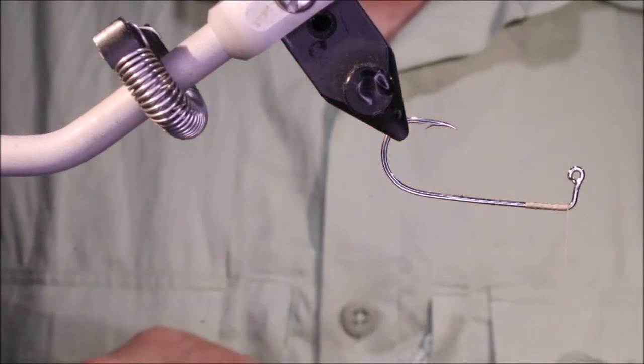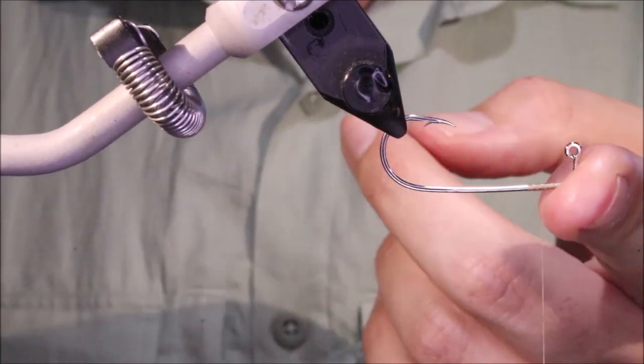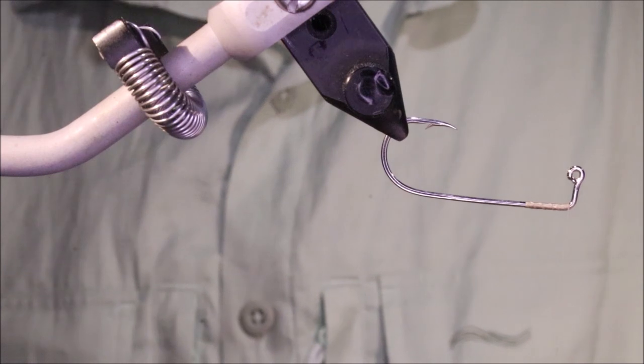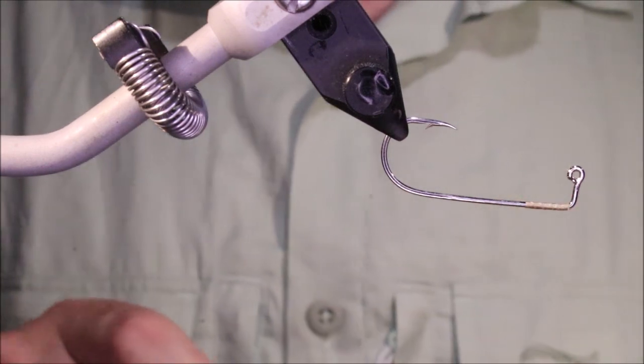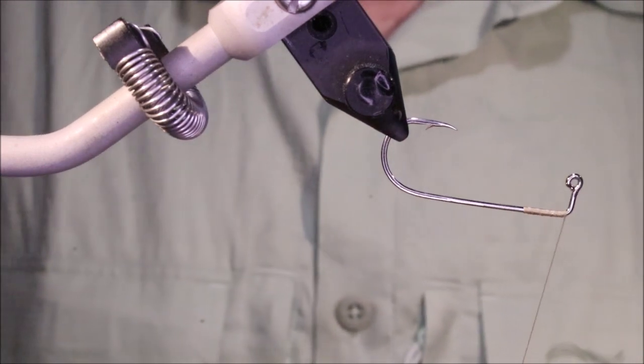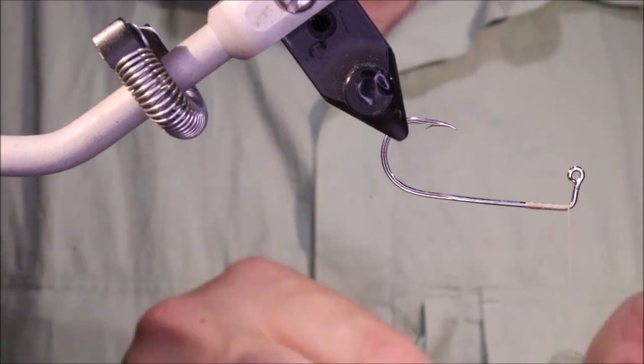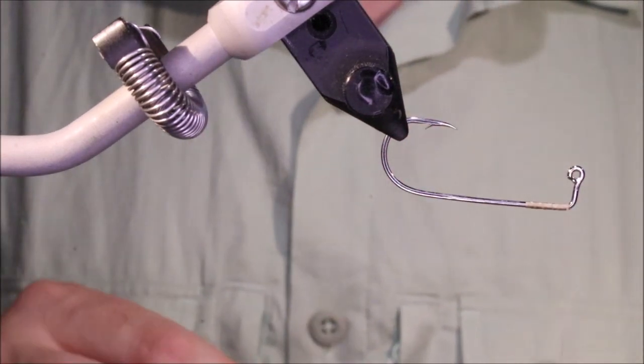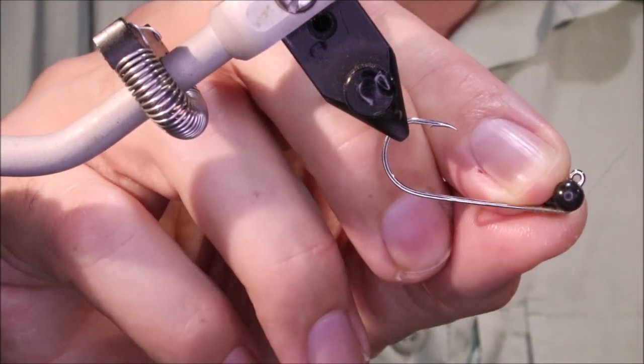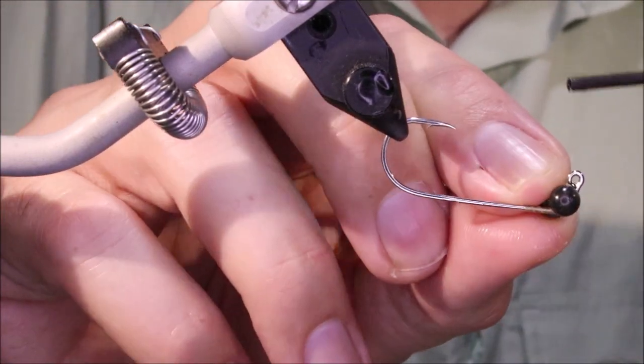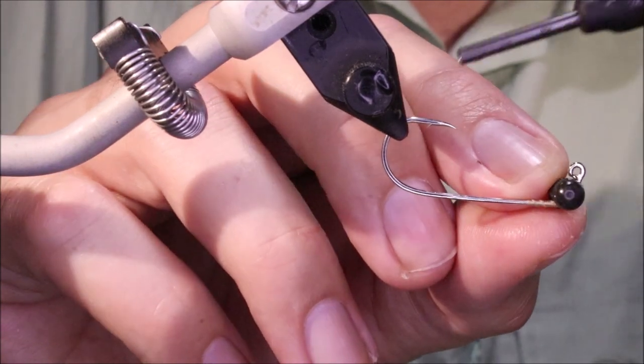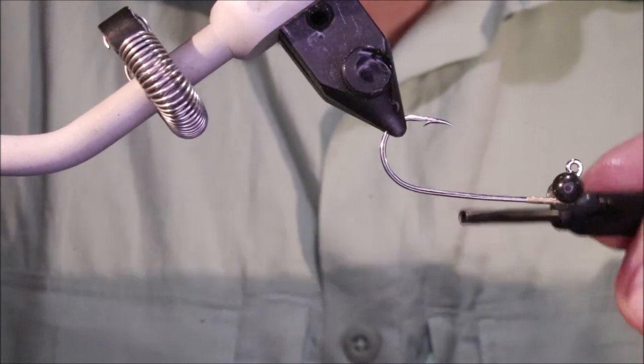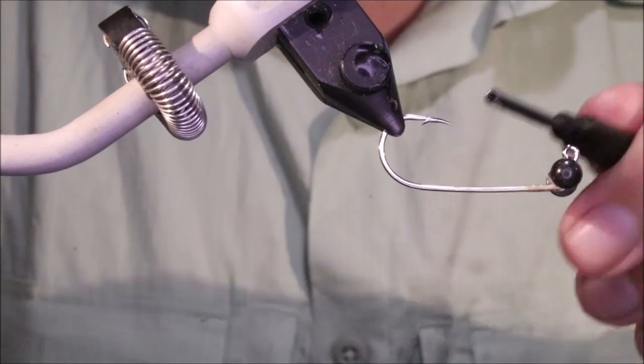So I've got my hook in my vise. This is an Allen Jig hook, the J200 I think it's the code. It's a 1-0. And I've just started some Uni 6-0 in tan. Thread doesn't really matter. You can use a bright thread if you want a hot spot near the head. It's entirely up to you. But something that's at 140 denier is about the right size for this.